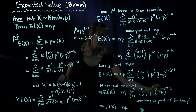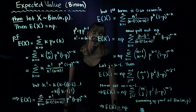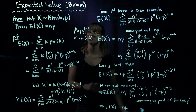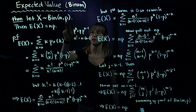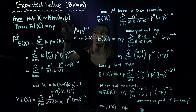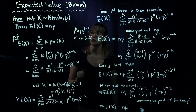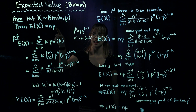This sum equals 1, which means that the expected value of x is equal to n times p. So we've proven what we needed to prove: starting with a binomial distribution with n trials and probability of success p, we showed that the expected value of this random variable is n times p.